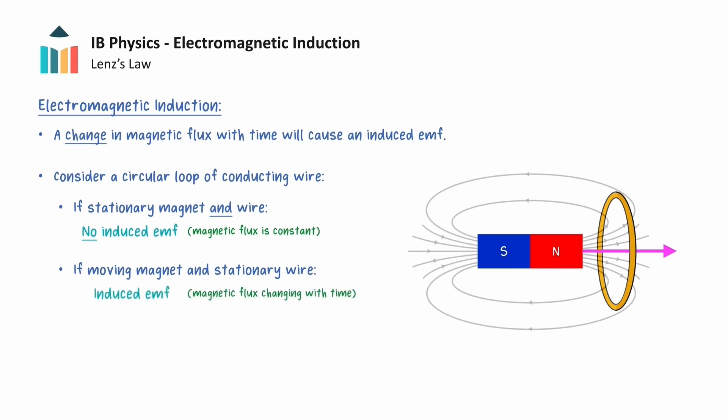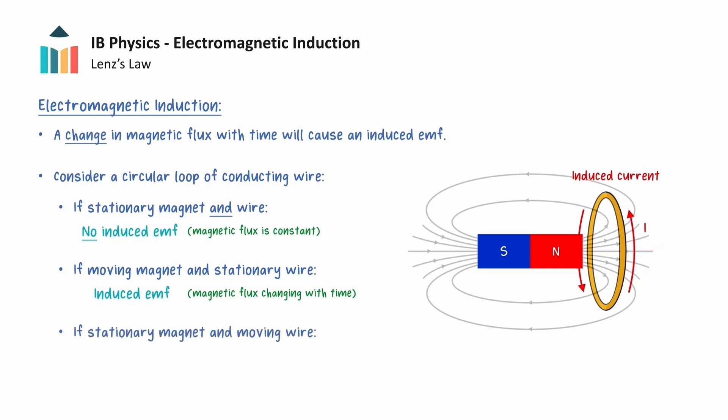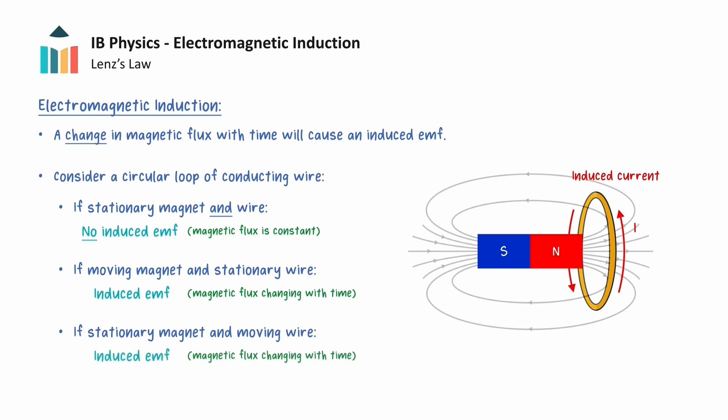This induced EMF is always generated and will result in an induced current as we have a closed loop. It is also possible for the magnet to be stationary while the loop of wire moves in any direction, and this will also induce an EMF in the wire. As long as there is a relative motion between the magnetic field and the conducting loop, then there will be a changing magnetic flux, and an EMF will be induced in the conducting wire.